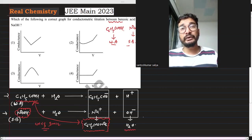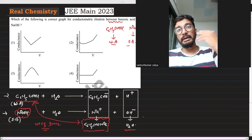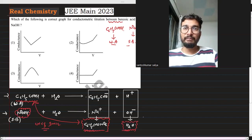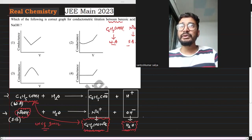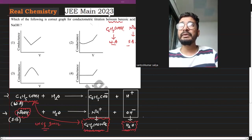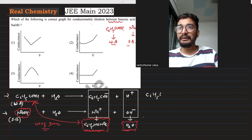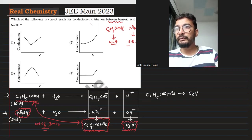The product formed is C6H5COONA (sodium benzoate) when we add water.